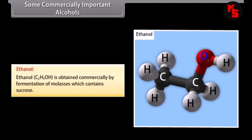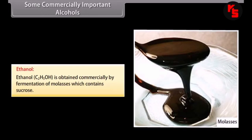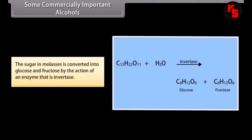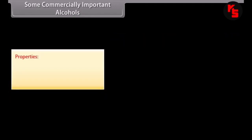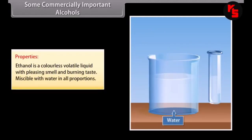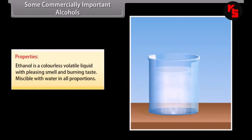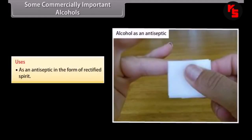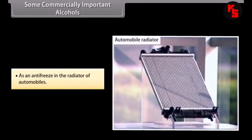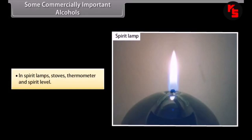Ethanol: ethanol is obtained commercially by fermentation of molasses, which contains sucrose. The sugar is first converted into glucose and fructose by the enzyme invertase, then glucose and fructose undergo fermentation in the presence of the enzyme zymase to produce ethanol and carbon dioxide. Ethanol is a colorless, volatile liquid with a pleasing smell and burning taste, miscible with water in all proportions. Uses: as an antiseptic in the form of rectified spirit; as an antifreeze in automobile radiators; and in spirit lamps, stoves, thermometers and spirit levels.